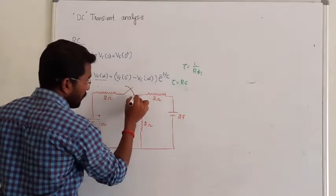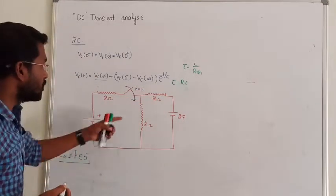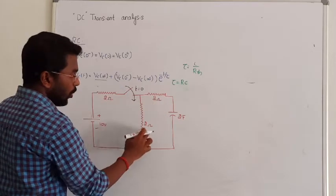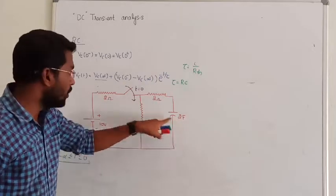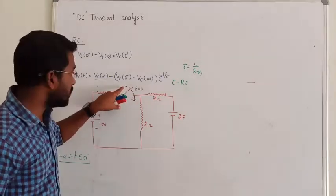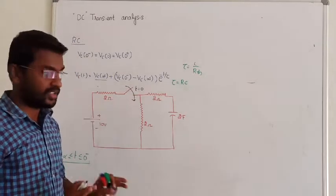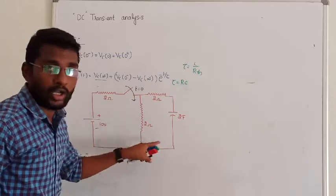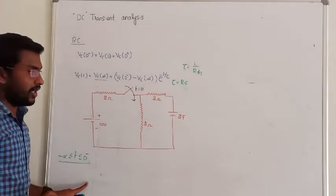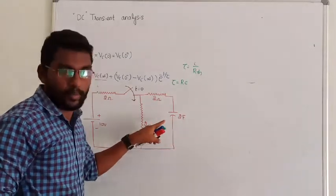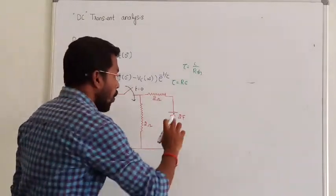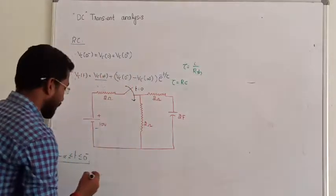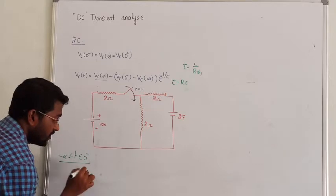We are going to close this switch at T equal to 0. Before operating the switch, from minus infinity to 0⁻, the circuit has a 2-ohm, 2-ohm, and capacitor configuration. Since the switch is open before T=0, the value of VC(0⁻) is going to be 0.